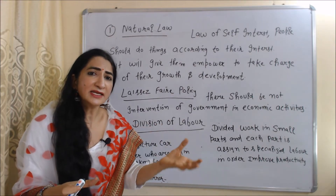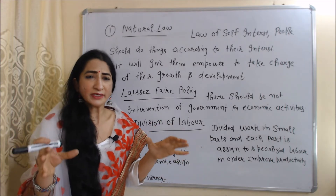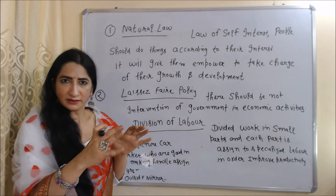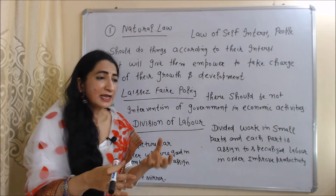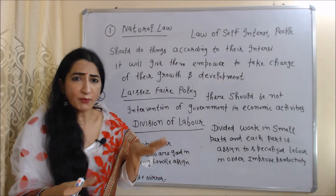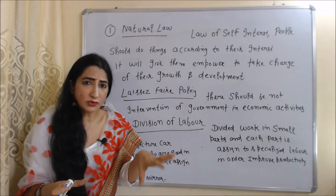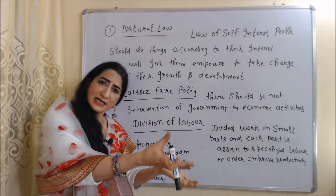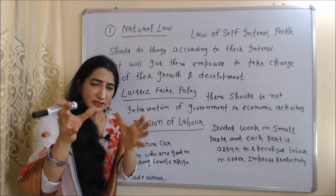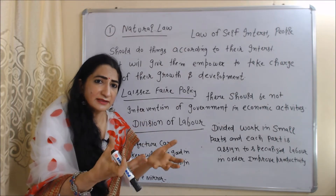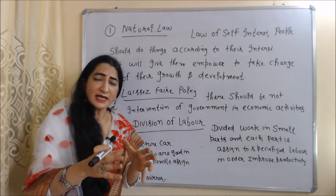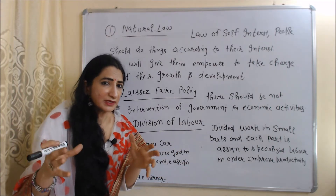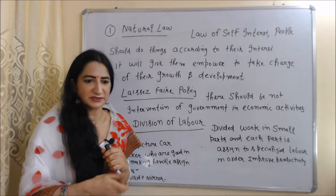Division of labor means dividing work into small parts and assigning each part to specialized workers. For example, to manufacture a car, divide the task into small parts and assign each to specialized workers — those good at making handles are assigned that task, those good at making tires get that task, and those specialized in designing outside mirrors get their task. By doing the same task over a long time period, workers become expert and eventually the productivity of the organization will increase.